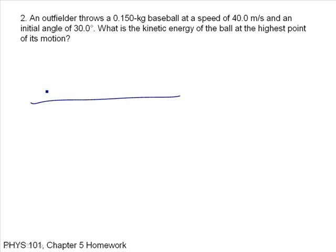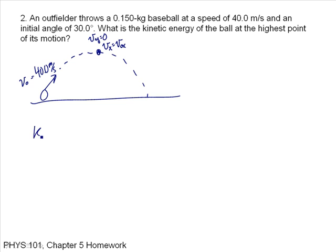If I consider this, I have a ball that follows a projectile's path. Its initial speed is 40 meters per second. At the top of the trajectory, the velocity in the y direction is zero, and the velocity in the x direction equals the initial velocity in x, because the acceleration in the x direction is zero. So at the top of the trajectory, the kinetic energy is just one-half times m times vx squared.